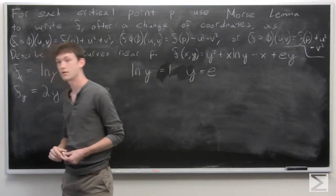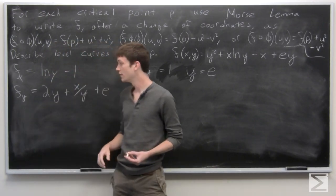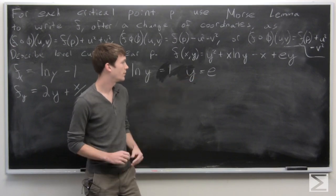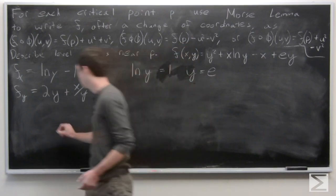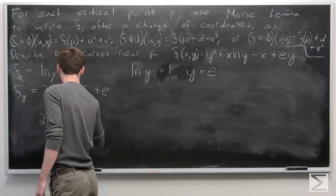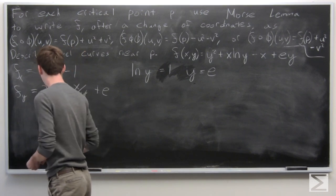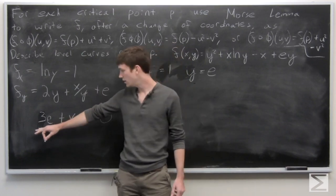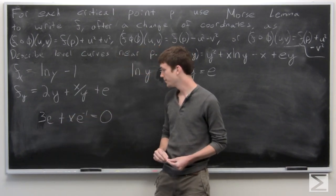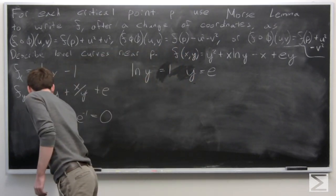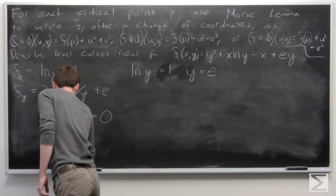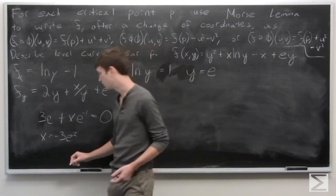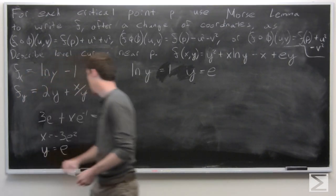Now we set the partial derivative of f with respect to y equal to zero. Since y must equal e at a critical point, we plug that in and combine 2e plus e to get 3e plus x times e to the negative 1. Solving for x, we get x equal to negative 3e squared. So our critical point lies at x equals negative 3e squared and y equals e.